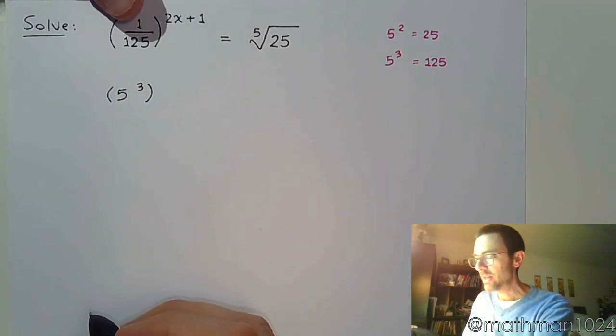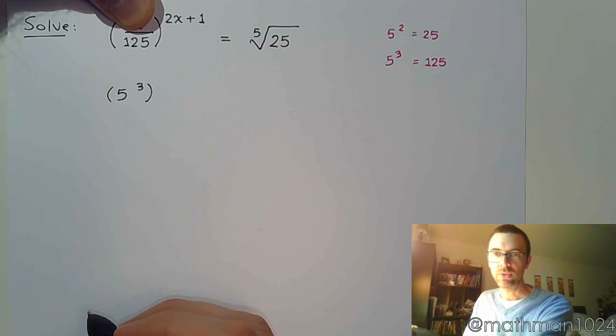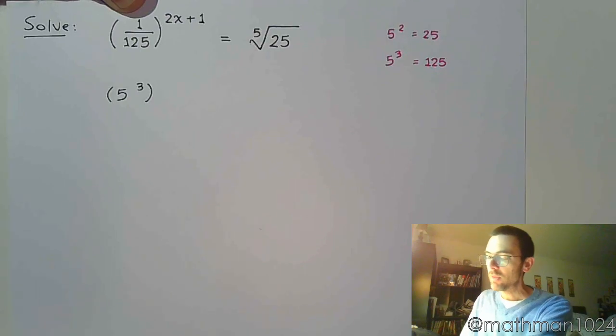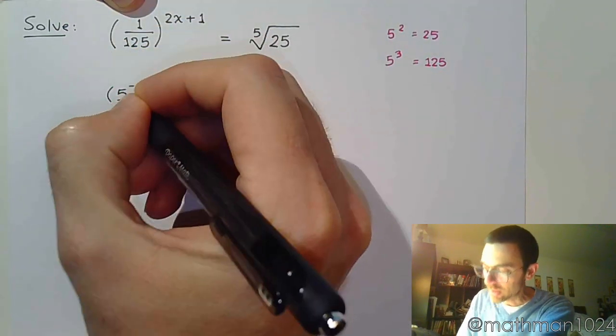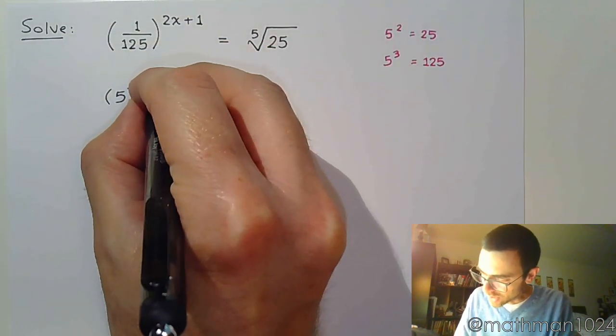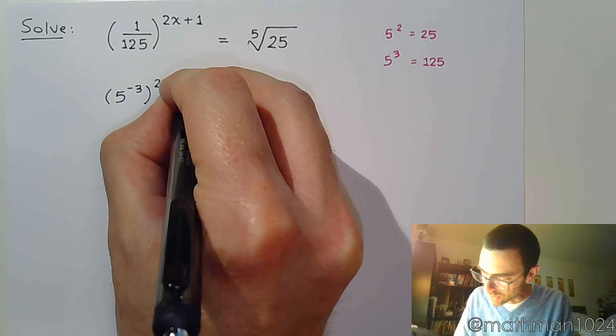Well, first of all, let's look at this 1 over 125. 125 is 5 to the third, so if I just had this, we would say 5 to the third. However, since it's in the denominator, think back to what we saw in the last video - that means this is going to be a negative power. It's a negative that's going to put that guy in the denominator, and then this is raised to the 2x plus 1.